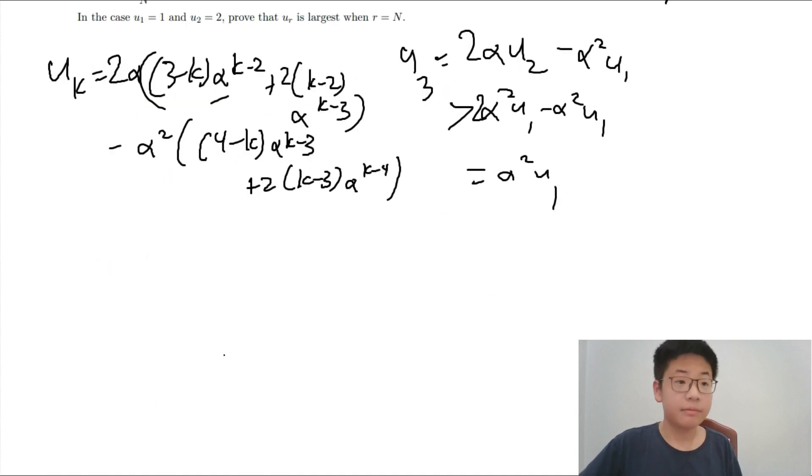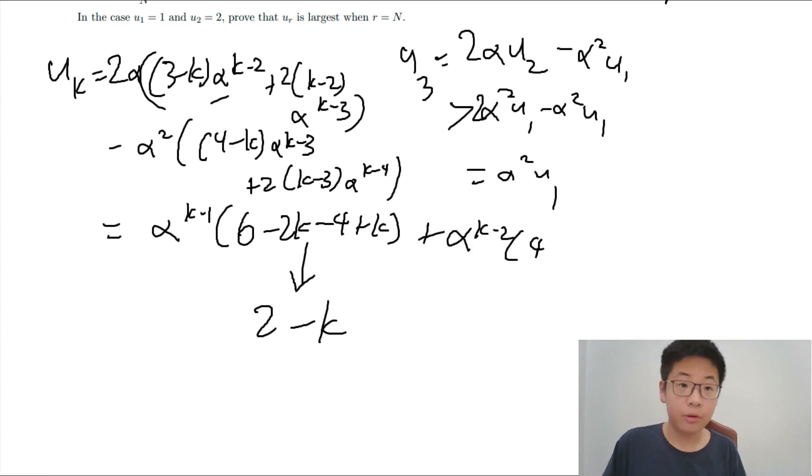Then, you will have alpha to the K minus 1, 6 minus 2K, alpha to the K minus 4 plus K, alpha to the K minus 4, plus alpha to the K minus 4, K minus 8 minus 2K plus 6.